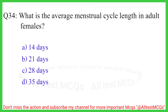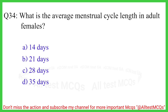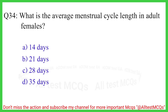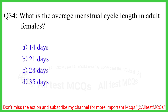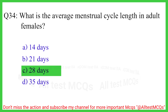Question number 34. What is the average menstrual cycle length in adult females? The correct answer is option C, 28 days.